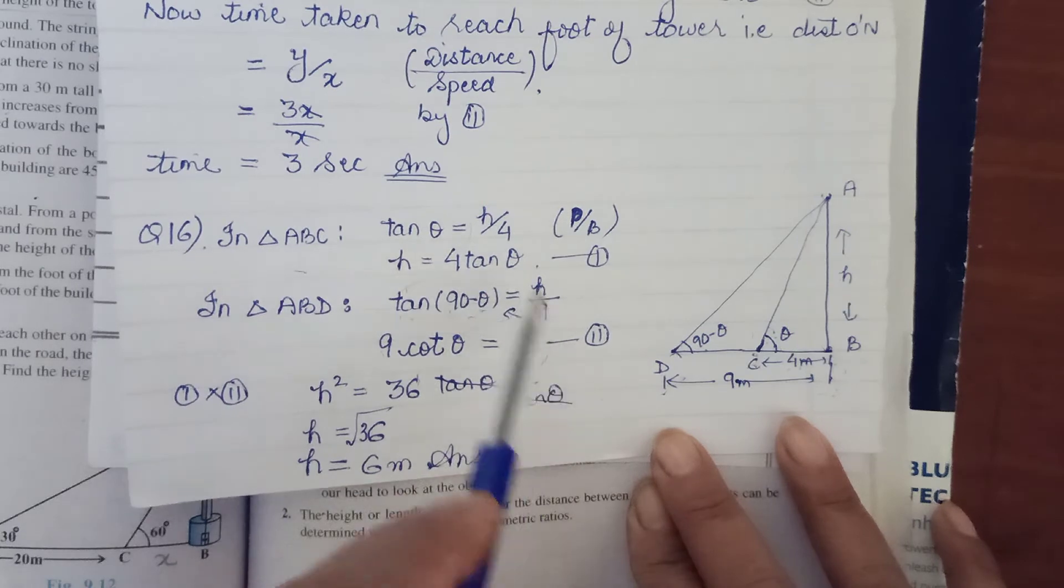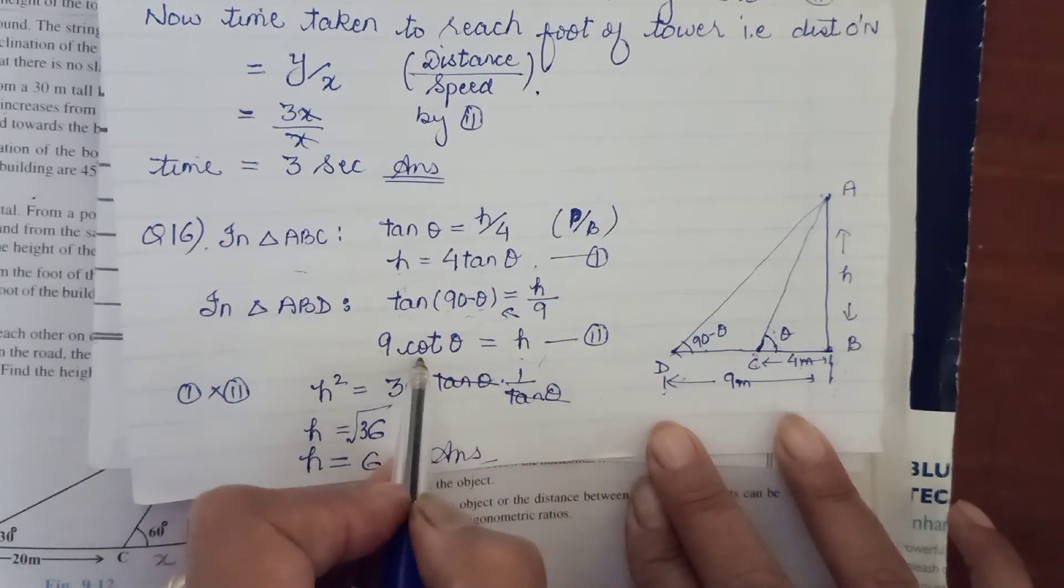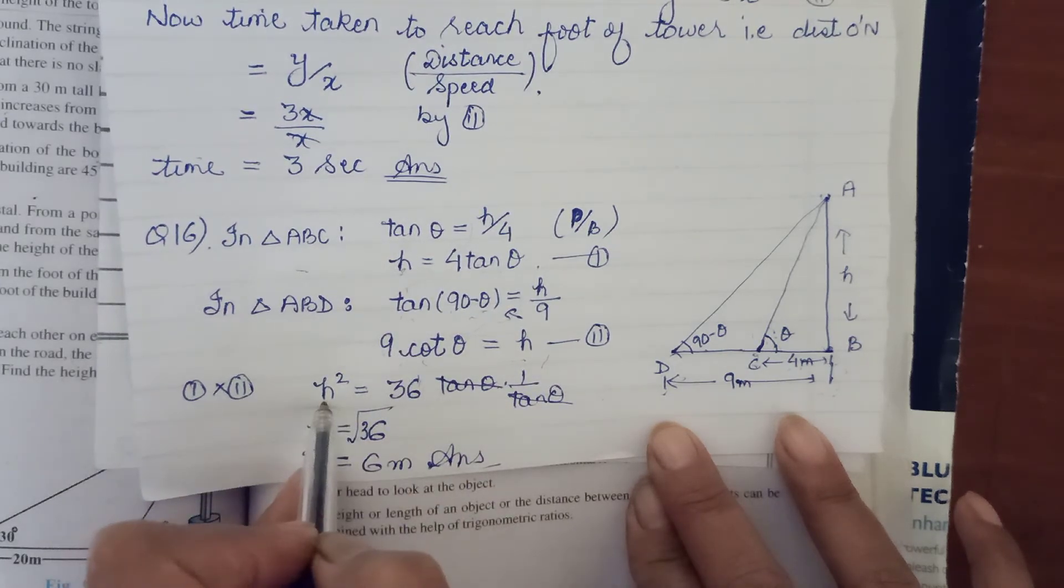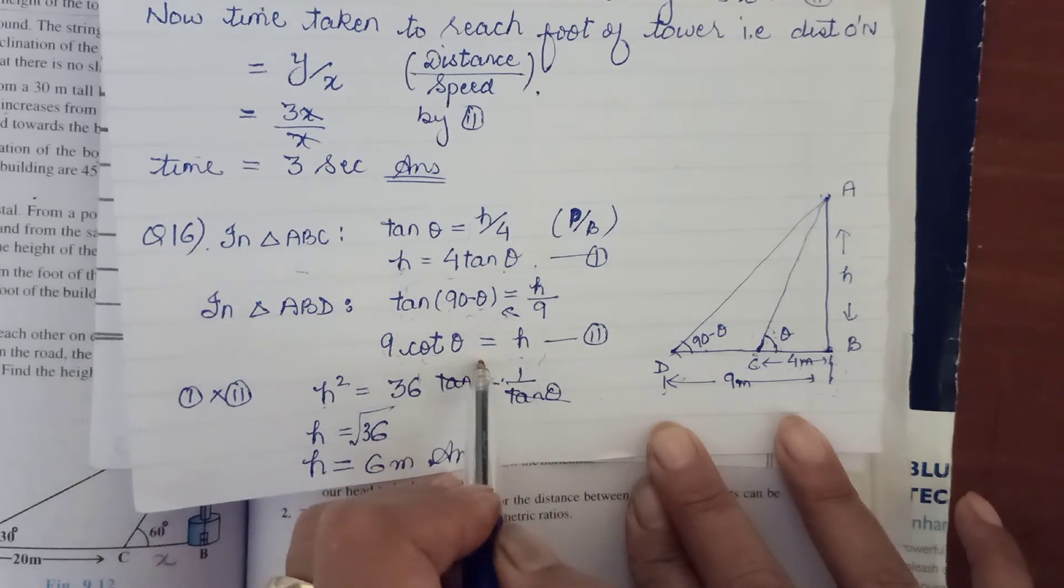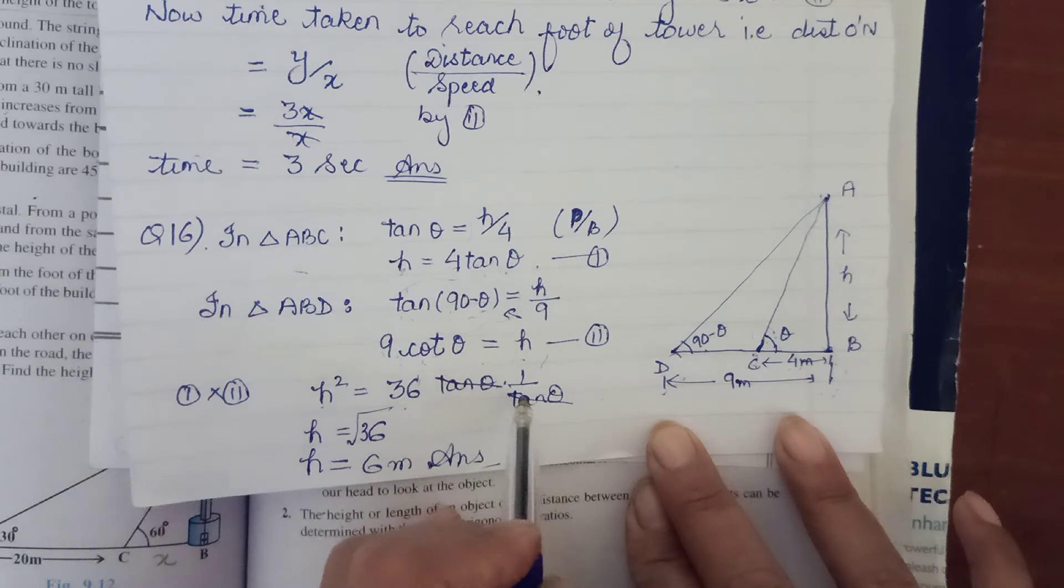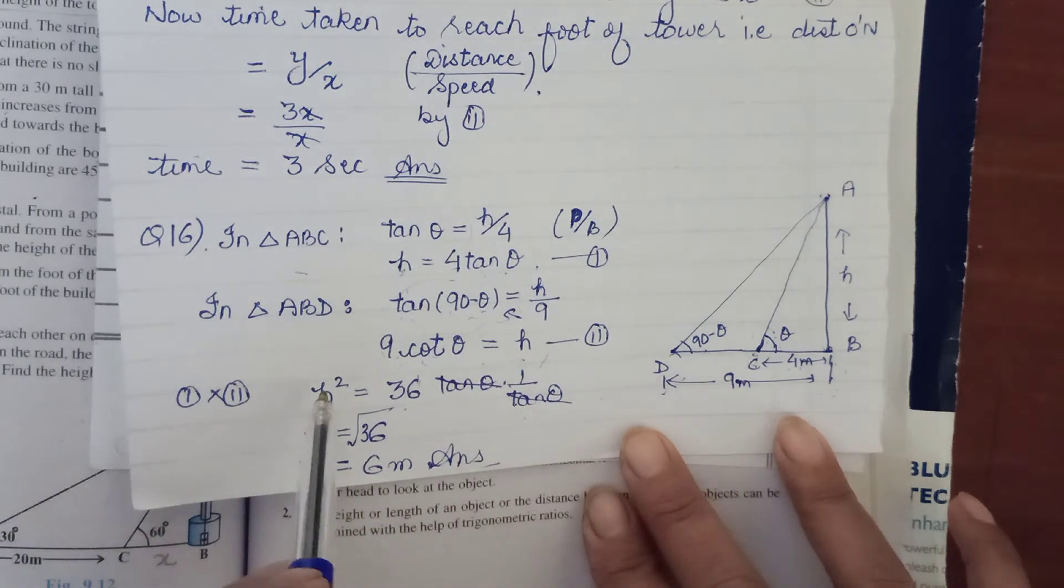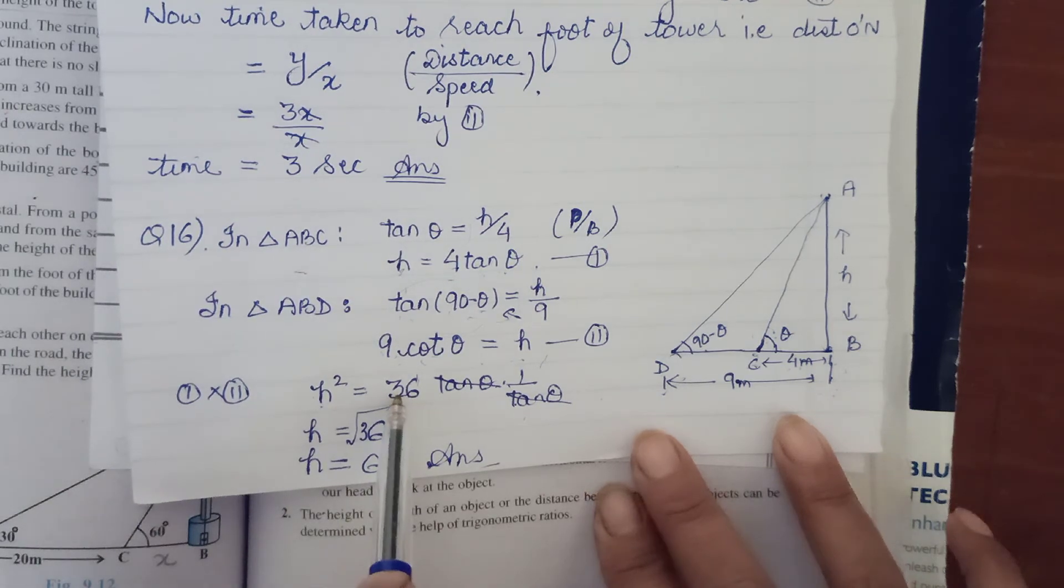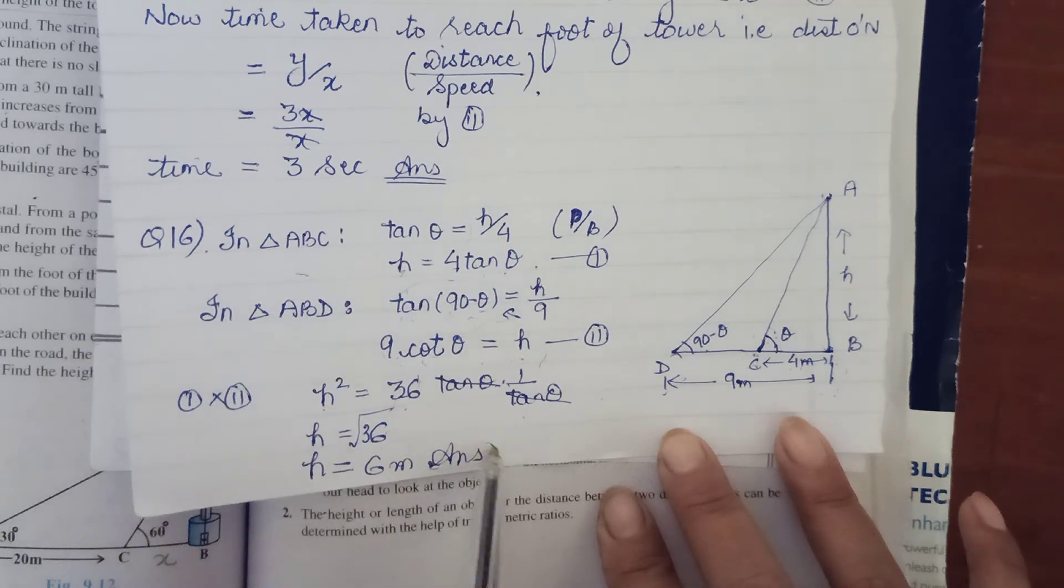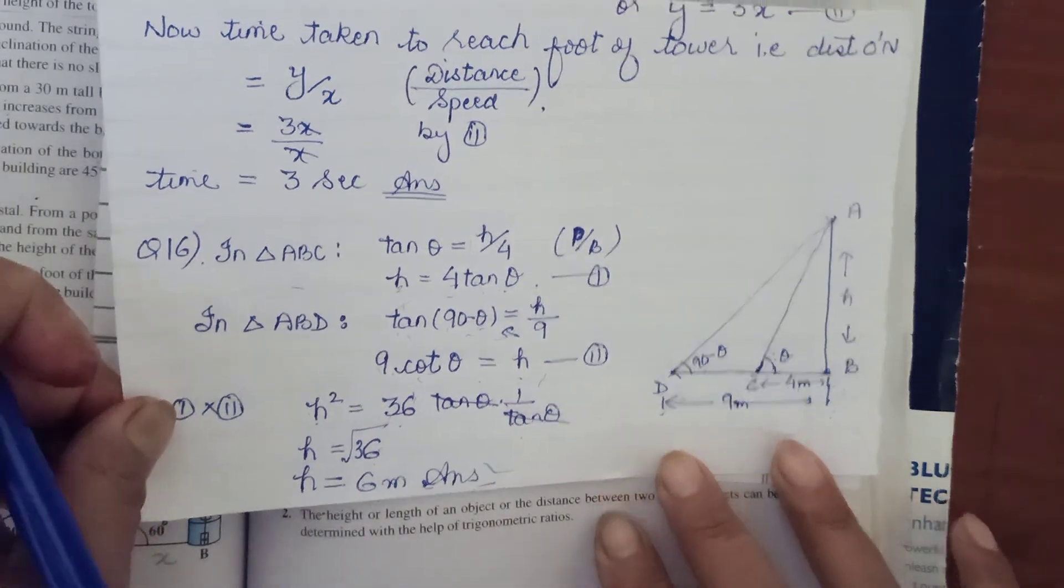Now we are multiplying these two equations. H is equal to 9 cot theta. So that H and H together becomes H square. Then 4 tan theta into 9 cot theta. So 4 nines are 36. Tan theta into cot theta is 1, because cot is reciprocal of tan. So we are multiplying these two equations and we have got H square is equal to 36. So H would be under root of 36, which is 6. This is your answer. They had said show that the height would be 6.